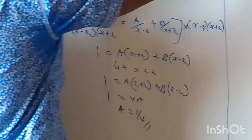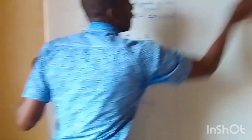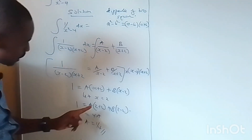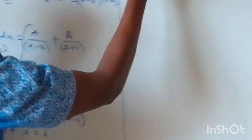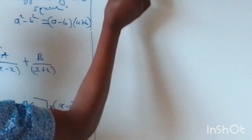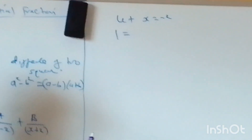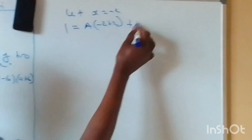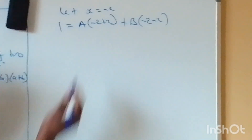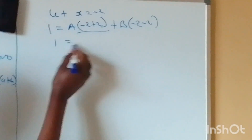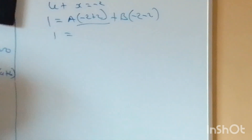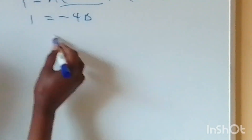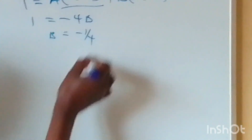For the second unknown, let x equal negative 2. Then 1 equals A(negative 2 plus 2) plus B(negative 2 minus 2), which gives 1 equals 0 plus B(negative 4), so 1 equals negative 4B. Therefore B equals negative one quarter.